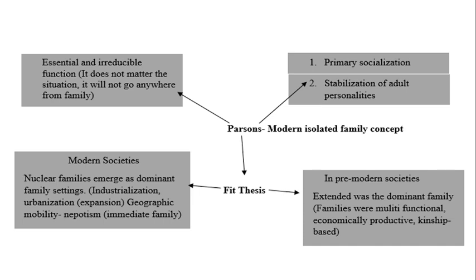There are some criticisms of Parsons' theory. The first is that it is too neat — social change doesn't happen in such an orderly manner. Another criticism is that 10% of households contained extended kin, and kin networks were still strong in East London as late as 1970. These criticisms challenge Parsons' functionalist perspective on the family.